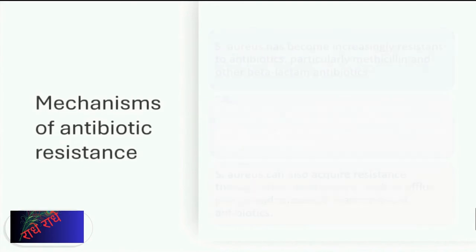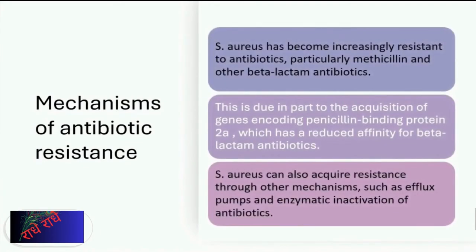S. aureus is an antibiotic-resistant pathogen that has become increasingly problematic. To understand how this has happened, it is necessary to examine how the organism has developed resistance mechanisms. For instance, its resistance to methicillin and other beta-lactam antibiotics is due to its possession of genes encoding penicillin-binding protein 2A, which has lower affinity for beta-lactams. Additionally, resistance can appear as a result of efflux pumps and enzymatic inactivation of antibiotics.